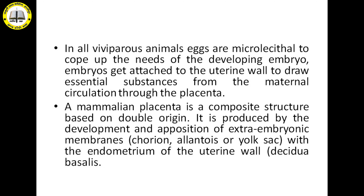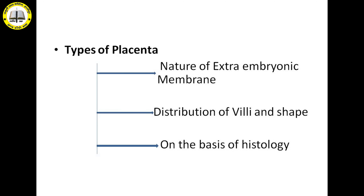How does nourishment reach from the mother's body to the embryo? It passes from the mother's body to the embryo with the help of the placenta. So placenta is that structure which, during the development of the growing embryo, develops and helps in getting nourishment from the mother's body to the growing embryo. Placenta is a structure that develops from both maternal tissues and the extra-embryonic tissues of the growing embryo.